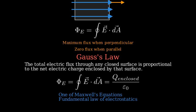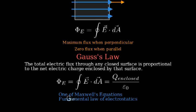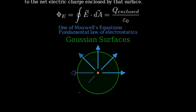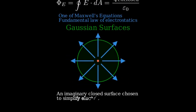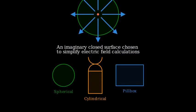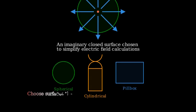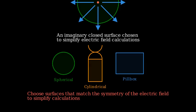A key concept in using Gauss's Law is choosing an appropriate Gaussian surface — an imaginary closed surface that we choose to simplify our calculations. The beauty of Gauss's Law is that we can choose any closed surface, but smart choices make calculations easier. For problems with spherical symmetry, we choose a spherical Gaussian surface; for cylindrical symmetry, a cylindrical surface; and for planar symmetry, a rectangular or pillbox-shaped surface. The key is to choose a surface that matches the symmetry of the electric field, so that E is either constant, normal to the surface, or zero, making the dot product calculation simpler.